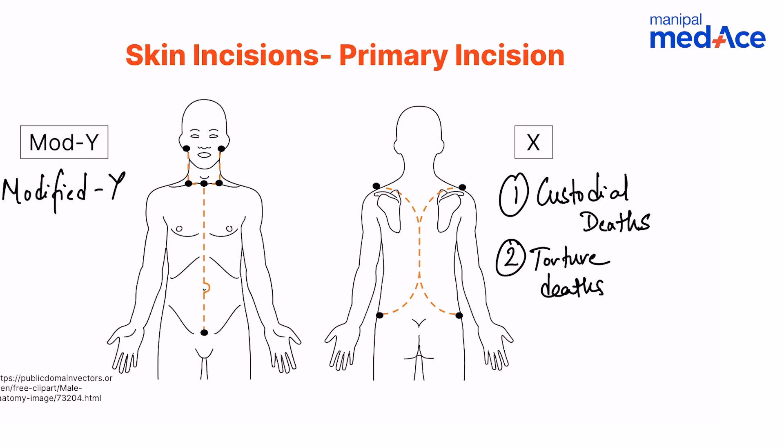What is supposed to happen is you follow the bony prominences — from the acromion process all the way down to the iliac crest. Some books say it can extend to the trochanteric point, but the superior point of the iliac crest is a better landmark because it allows you to reflect the tissue much more easily.